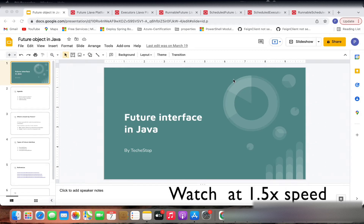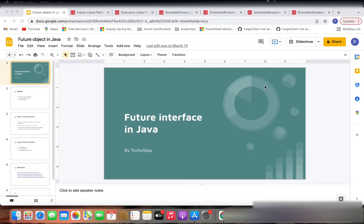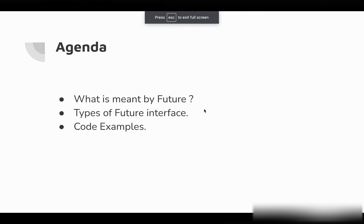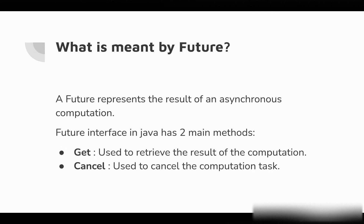Hi, this is Pratik from Techistop. Today in this video we'll be discussing the Future interface in Java. There are different types of future objects we'll be discussing with code examples. The agenda is: first we'll go through what is meant by Future, what a future object is in Java, what the different types of future interfaces are, and then we'll go through some code examples for each of them.